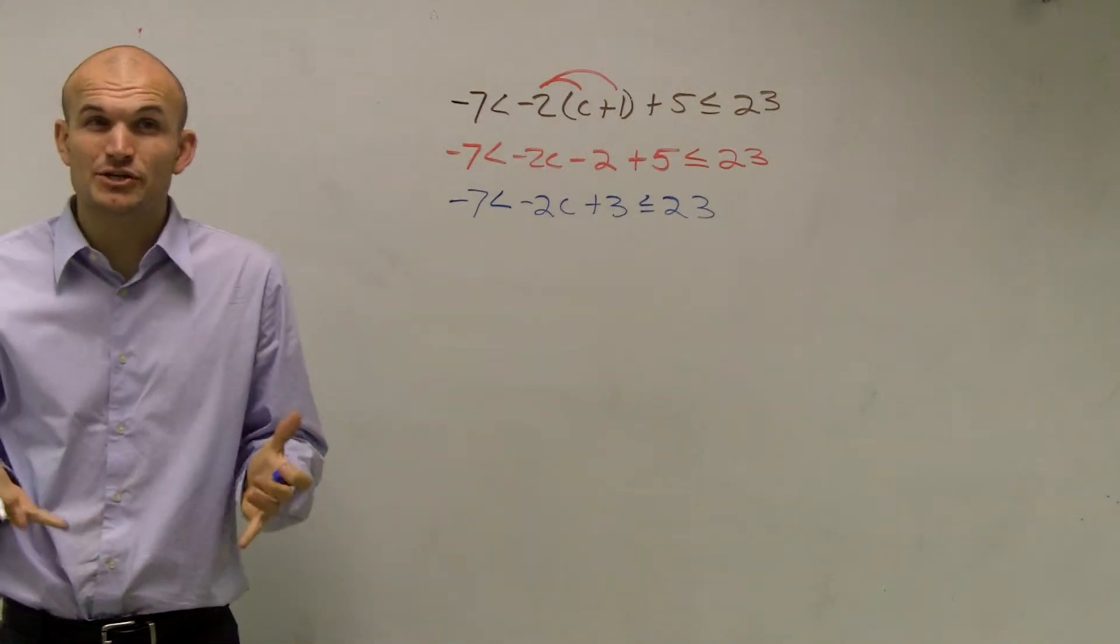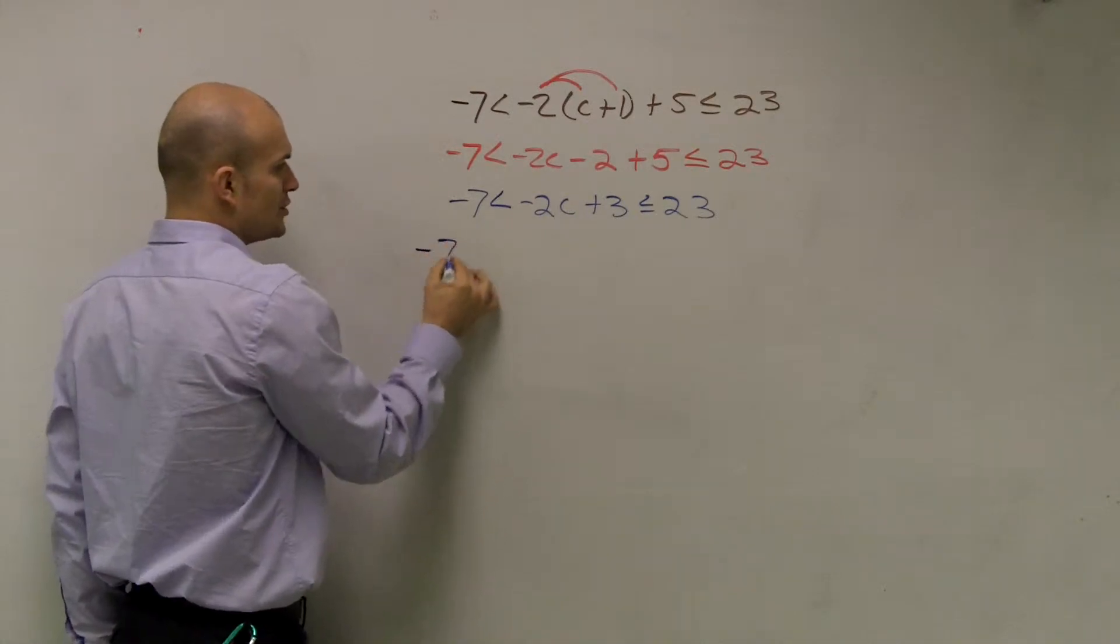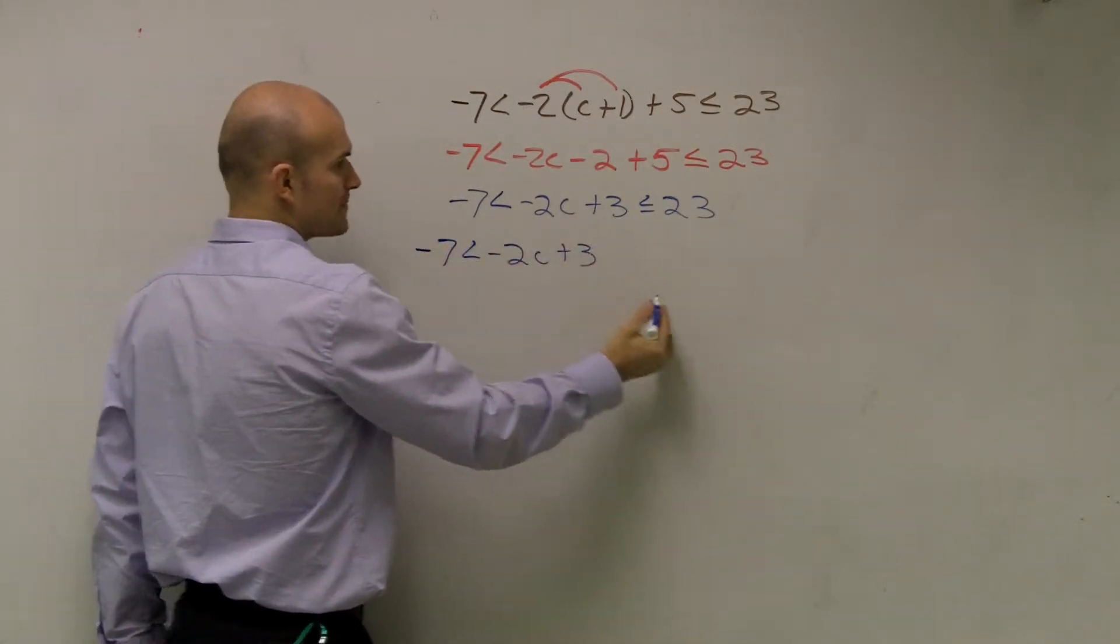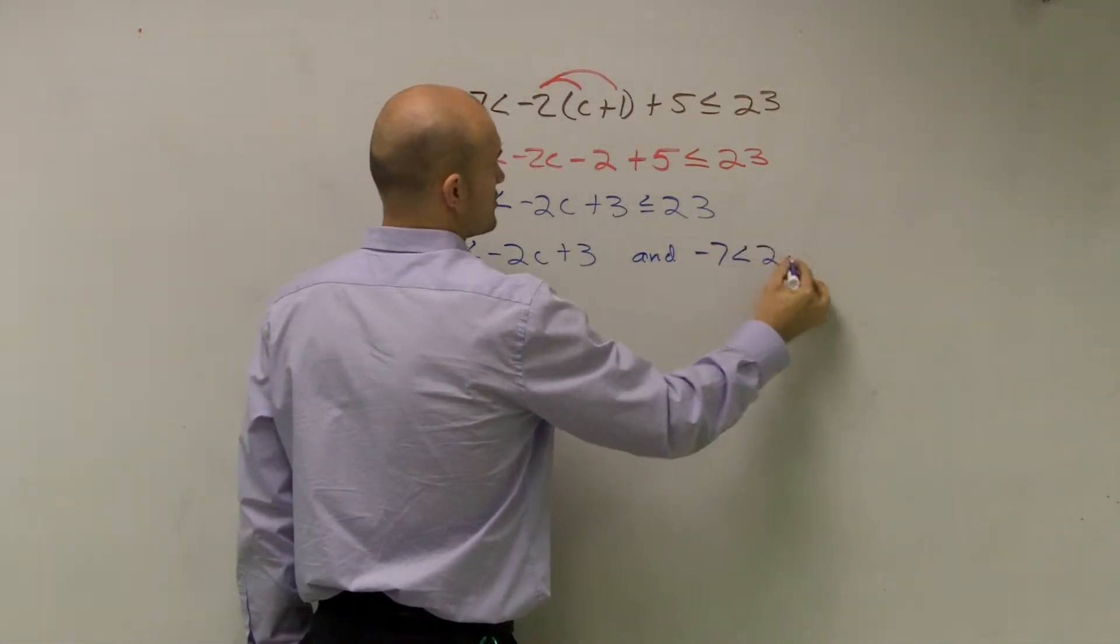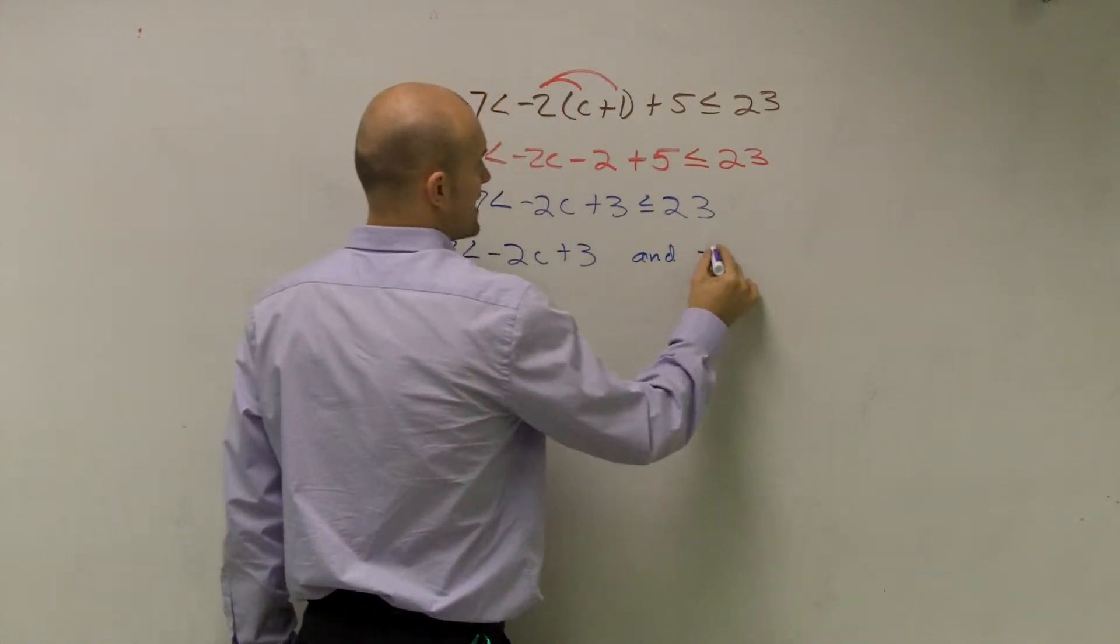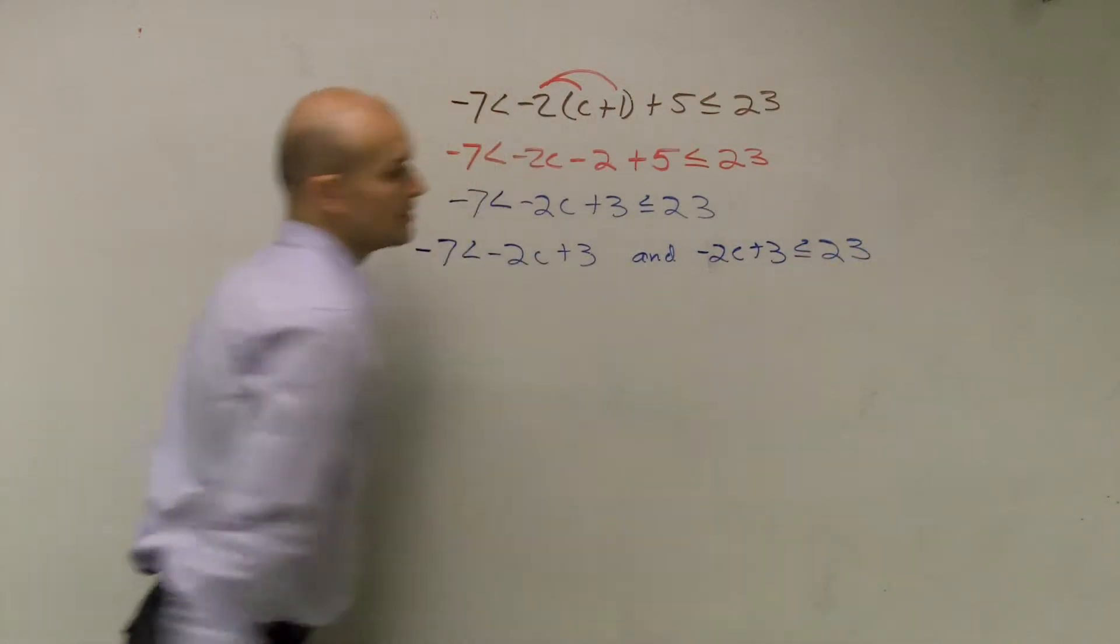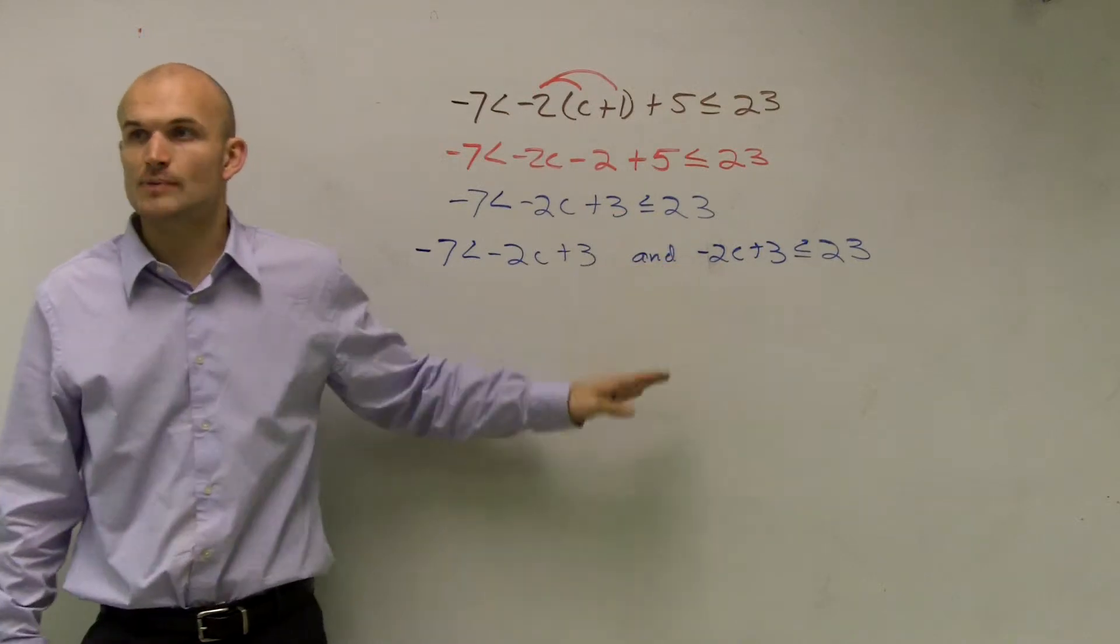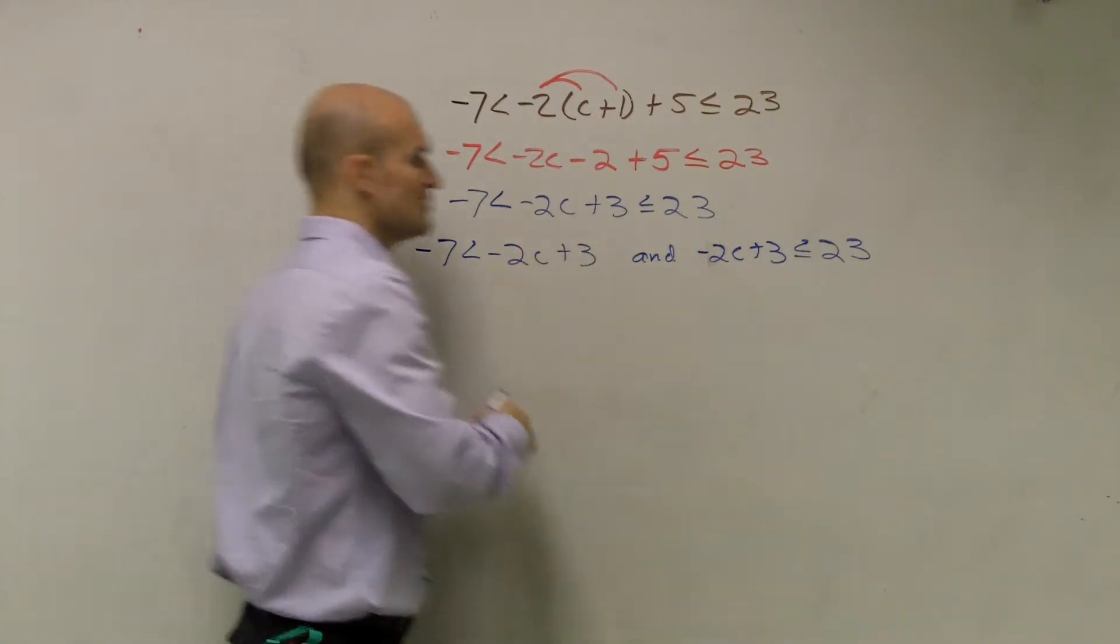Now there's two different ways we can do this. We can either separate it into two different inequalities. You can write negative 7 is less than negative 2c plus 3, and negative 2c plus 3 is less than or equal to 23. So remember our first problem we did? If you guys just want to write it as two separate inequalities, that's fine.